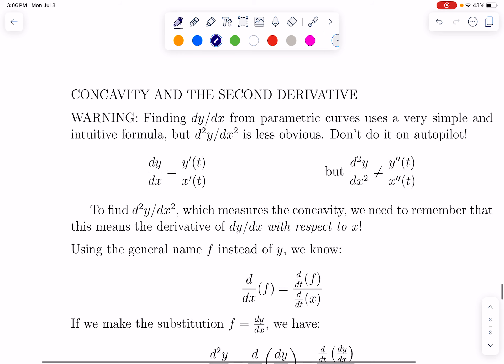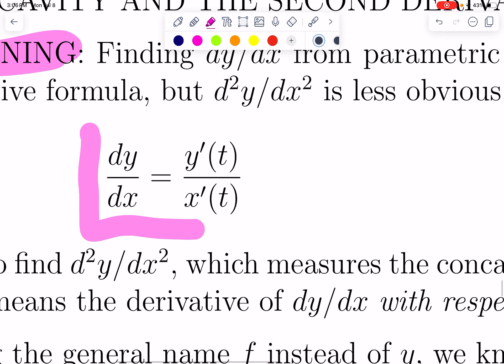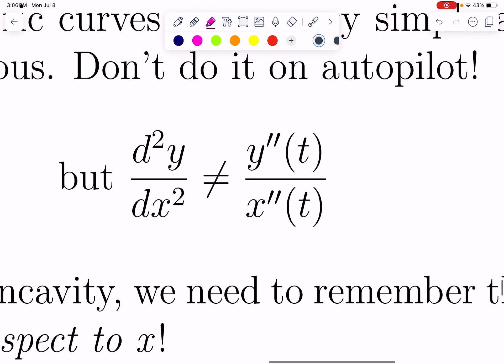Concavity is trickier — this is a warning. The first derivative with parametric equations feels very intuitive, but the second derivative is not. dy over dx, which measures the slope of the tangent line, is just the first derivative of y over the first derivative of x. A lot of people want the second derivative to just be second derivative divided by second derivative, but that is not true.